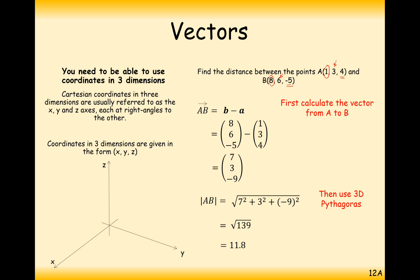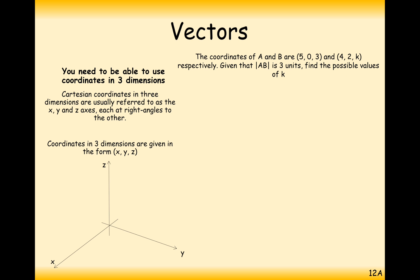That's how we work out distances using Pythagoras' theorem. A slightly trickier question here. The coordinates A and B: A is at 5, 0, 3, and B is at 4, 2, K respectively. The distance from A to B is 3 units. Work out the possible values of K.